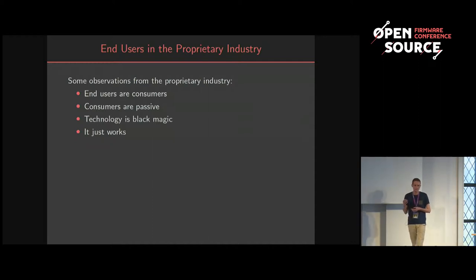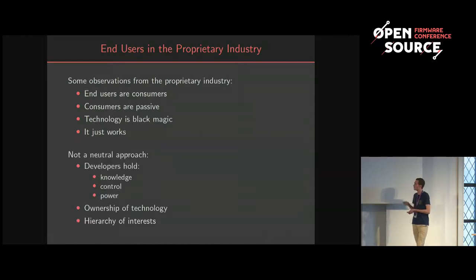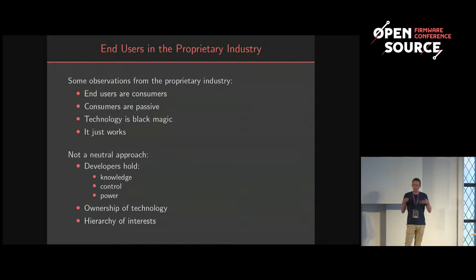The expectation is that the technology should just work and always serve the user's interest. But this approach is not neutral — the technology is made so that only developers have the exclusivity of knowledge. When you have exclusive knowledge of how something works, you're the only one who can have effective control over it. This creates a walled garden where only a few people in society have access to the knowledge, control, and power to decide what the technology does.